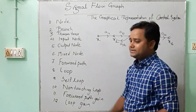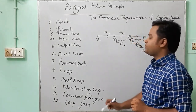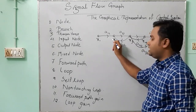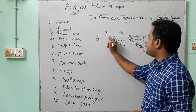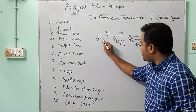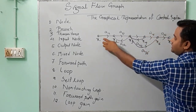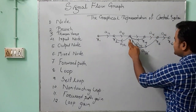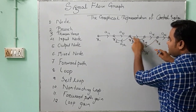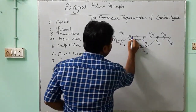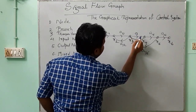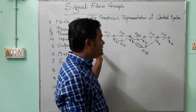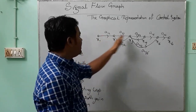Then we go for transmittance. What is transmittance? Transmittance is the gain. That means, from X1 to X2, in a branch, the value which is transmitted — A12 is the gain. A12 is transmitted from X1 to X2. Similarly, from X3 to X4, there is a branch, and in this branch the gain will be A34. From X1 to X6, there are several nodes, several branches, and several transmittances present.